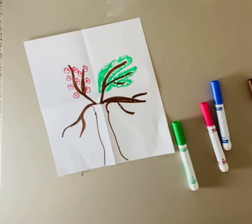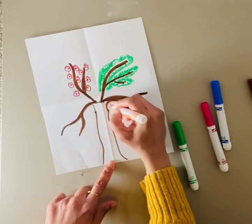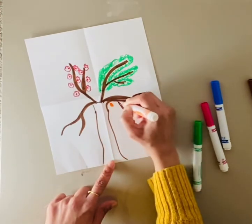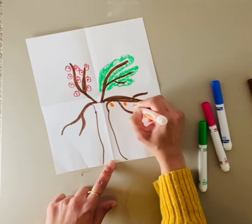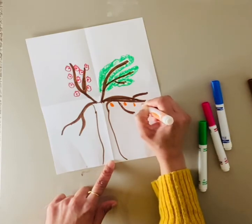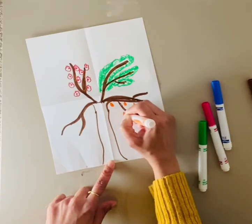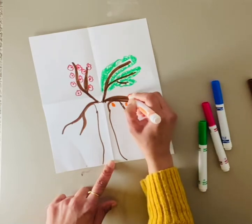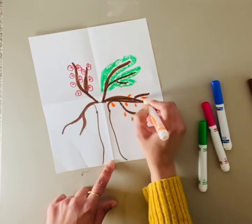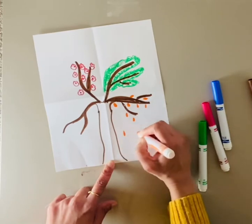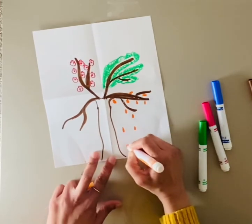The next season is fall. Fall is when we see all the beautiful fall colors, orange and yellow, and we see leaves falling too because of the winds.